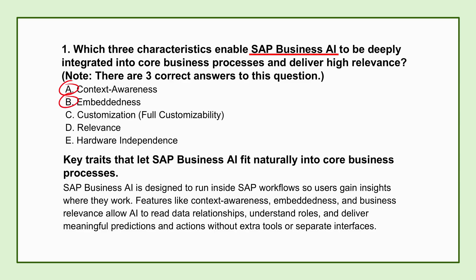That brings us to the final piece: relevance. This is about the quality of the AI models themselves. Relevance ensures the models are highly tuned — trained specifically on industry and business scenarios. Generic foundational models often struggle with the nuances of enterprise transactions; they don't understand the specific business context. By focusing the models this way, the outputs become immediately meaningful for precise decision-making and don't require heavy human interpretation.